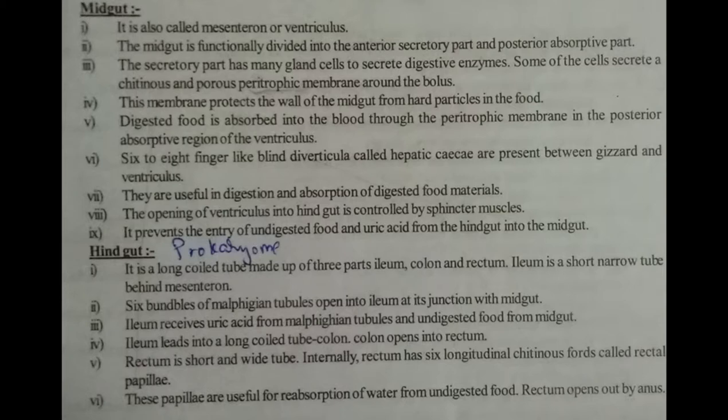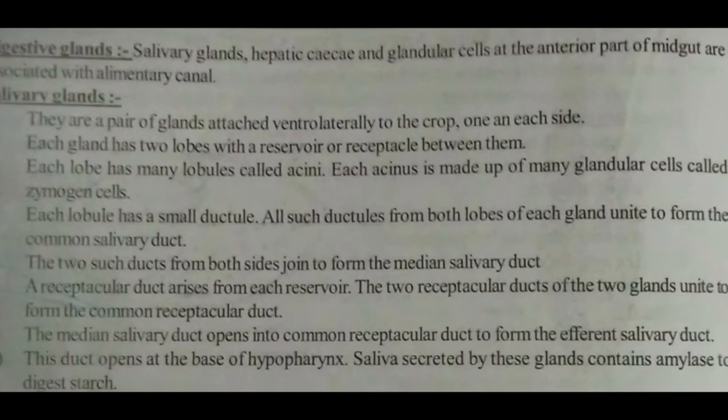The rectum is a short and wide tube. Internally, the rectum has six longitudinal chitinous folds called rectal papillae, which are useful for reabsorption of water from undigested food. The rectum opens into the anus. The digestive glands — salivary glands, hepatic caeca, and glandular cells at the anterior part of the midgut — are associated with the alimentary canal.